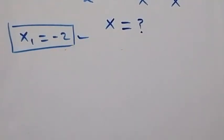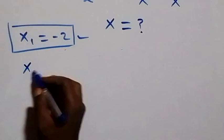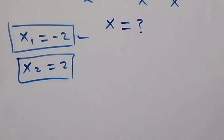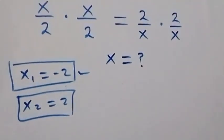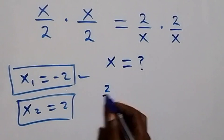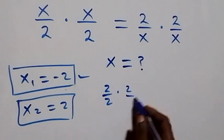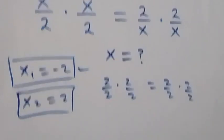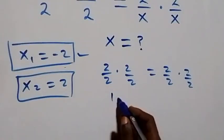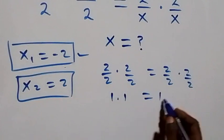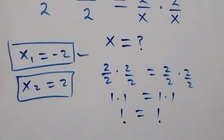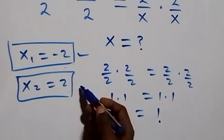For x equals 2, substituting gives us two over two times two over two, which is 1 times 1 equals 1 times 1. Left hand side equals right hand side, so x equals 2 also satisfies the given problem.